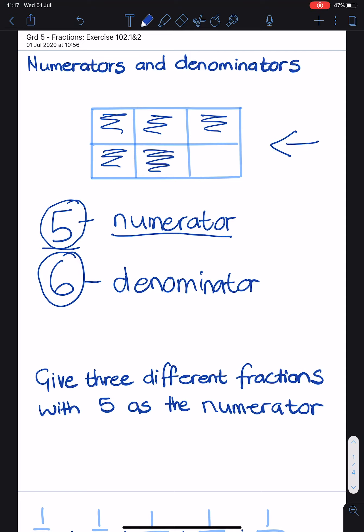So remember, the denominator tells us how many pieces there are all together. And the numerator tells us how many pieces have been taken.